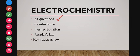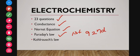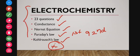The next topic is electrochemistry, in which 23 questions were asked in the past 10-year NEET question papers. You need to know conductance and conductivity — molar conductance and equivalent conductance — then the Nernst equation, Faraday's first and second laws, numericals related to Faraday's law, and Kohlrausch's law, which is really very important. You also need to learn the relationship between electrochemistry and thermodynamics.